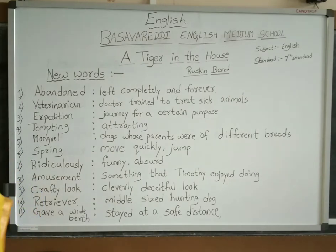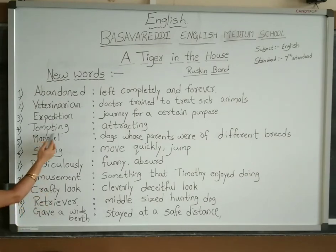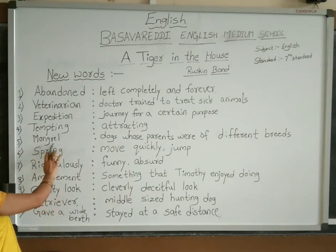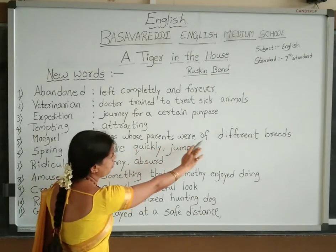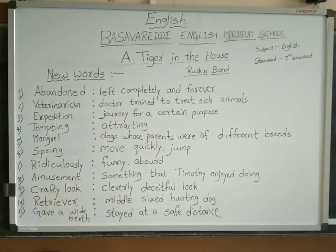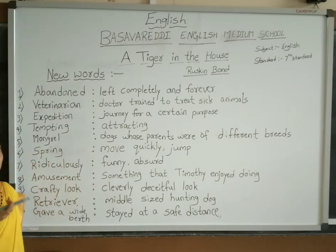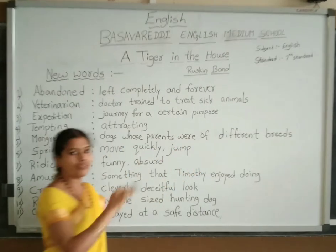'Chanting' means attracting. For example, nowadays you all are drawn towards video games — that is chanting. The next new word is 'mongrel,' which refers to a dog whose parents were of different breeds. As Ruskin Bond used to include animals in his stories, here mongrel means a puppy that comes from different breeds of dogs.